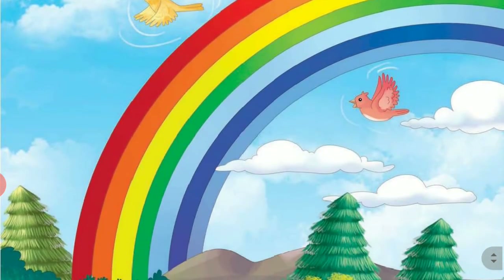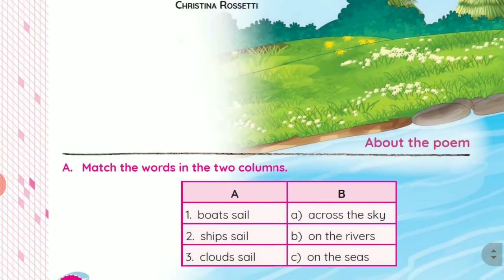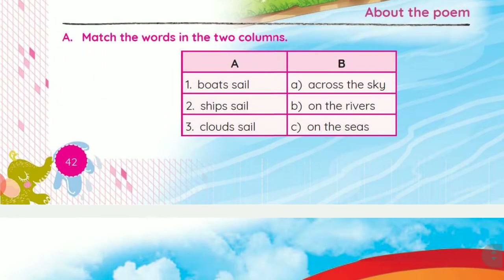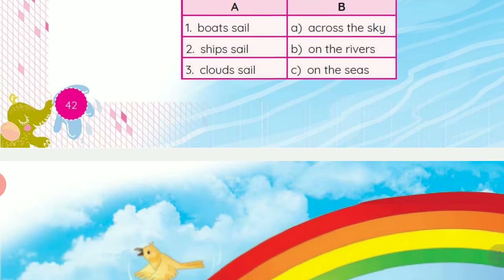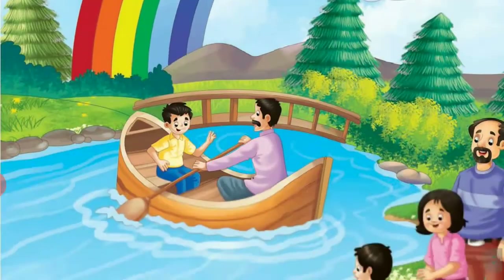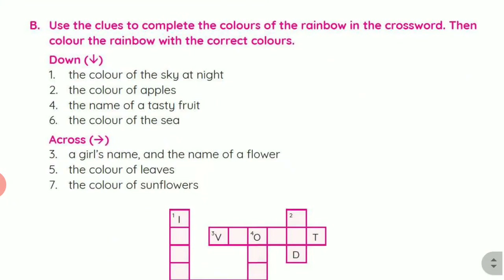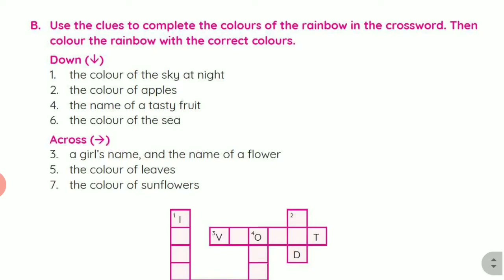Let us see the exercise. Match the words in two columns: Boats sail on the river, ships sail on the seas, clouds sail across the sky. Let us see the next exercise: use the clues to complete the colors of the rainbow in the crossword, then color the rainbow with the correct colors.